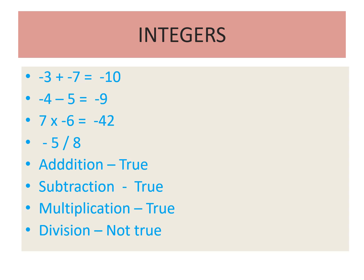For integers: −3 + (−7) = −10, an integer. −4 − 5 = −11, also an integer. 7 × (−6) = −42, an integer. So addition, subtraction, and multiplication are closed for integers. For division: −5 ÷ 8 = −5/8, which is a rational number, not an integer. So integers are not closed under division.